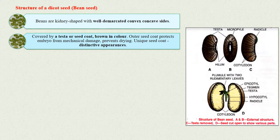A bean seed is covered by testa or seed coat, usually brown in color. The outer seed coat protects the embryo from mechanical damage and prevents it from drying out.